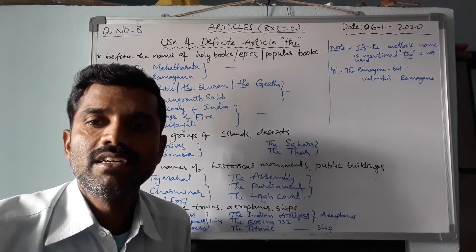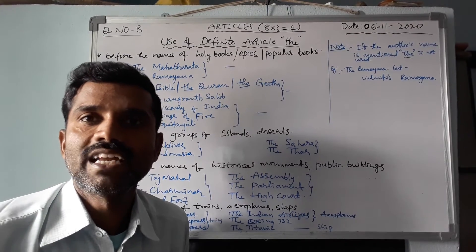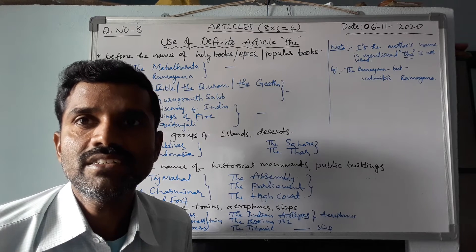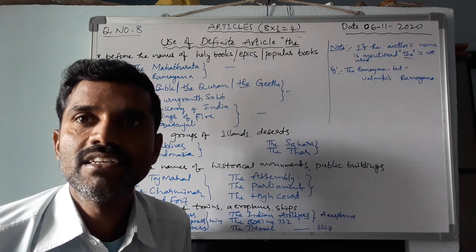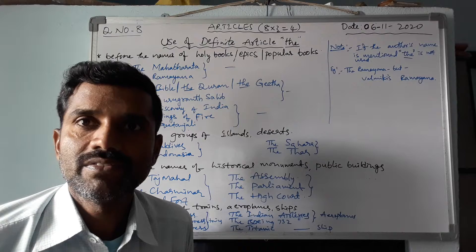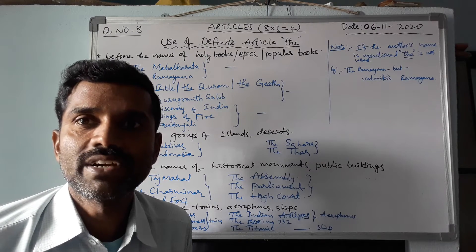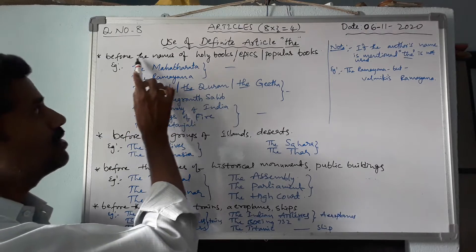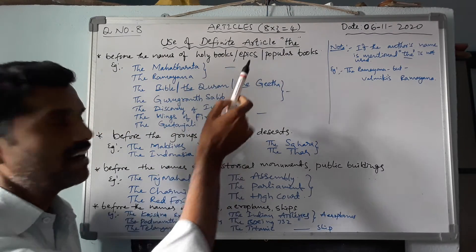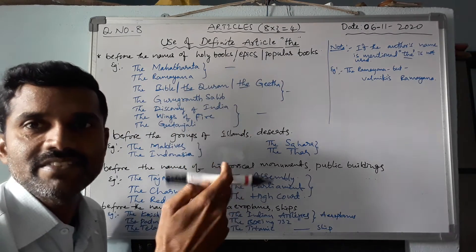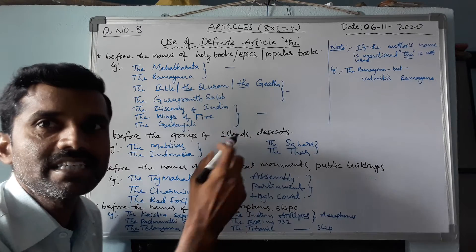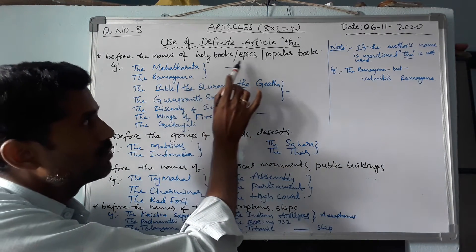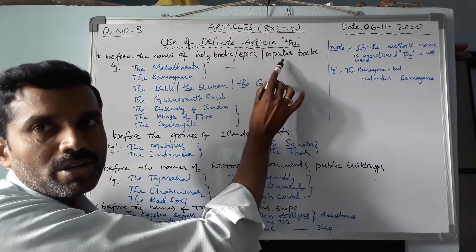Good morning students, we are learning articles — the eighth question. In this session we are going to learn definite articles, the remaining rules. Before use of the definite article 'the', we already studied some rules yesterday. Today's remaining rules start with: before the names of holy books, epics, or popular books.